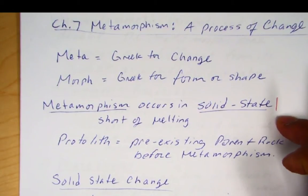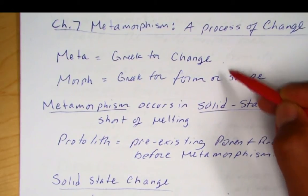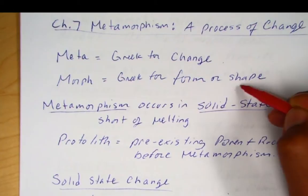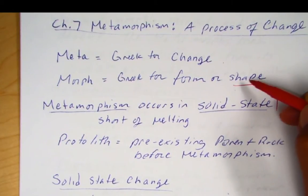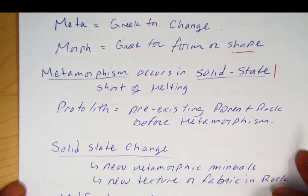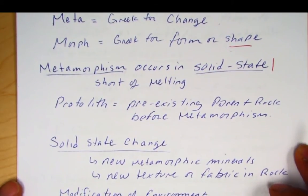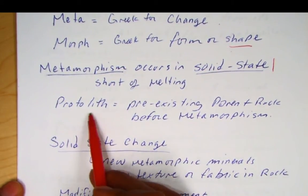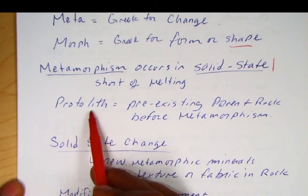A couple of things to note: 'meta' means change, whereas 'morph' just means shape. So don't confuse those two. Now, a big part of metamorphism is the source rock, and the source rock is called the protolith. Proto means what came before; lithic means stone.